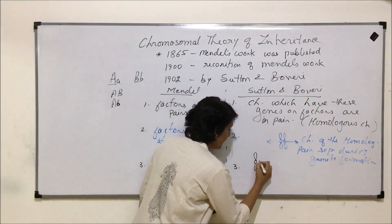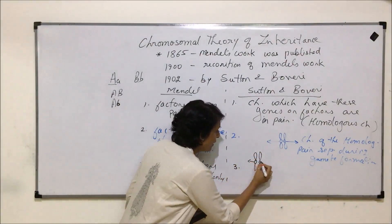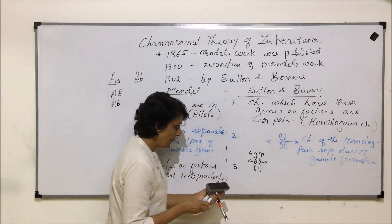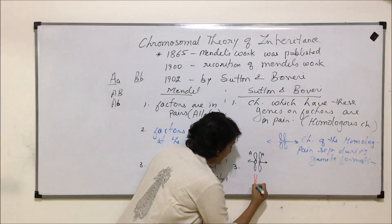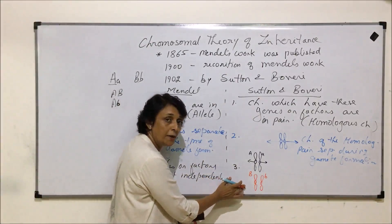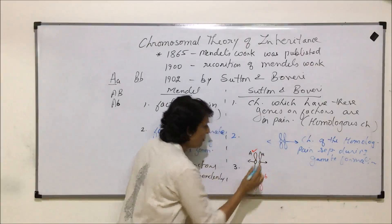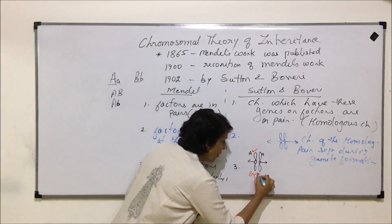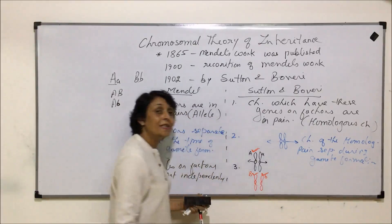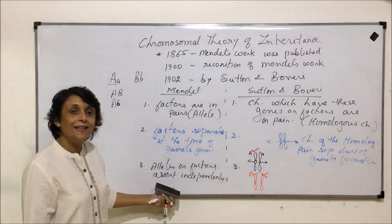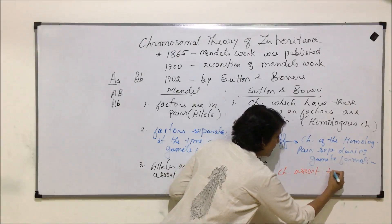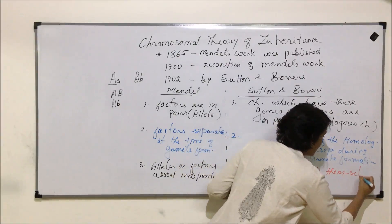Let us understand this further. Say this is one homologous pair — one chromosome has gene A and a, and the other chromosome has gene B and b. When we are talking of independent assortment, the dominant A-containing chromosome can go with the dominant B-containing chromosome, or it can also go with the recessive gene-containing chromosome. So that means exactly the same thing — but here we are talking in terms of chromosomes assorted independently.